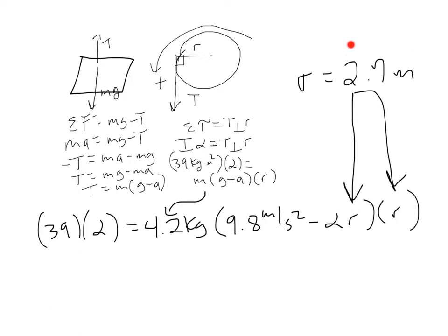r is given to us in the problem, is 2.7 meters, so we can plug it in there and there. Now, the only thing missing from this equation is alpha, and that's what the problem asks for, is angular acceleration alpha. So we just solve for alpha, and alpha turns out to be 1.6 radians per second squared.